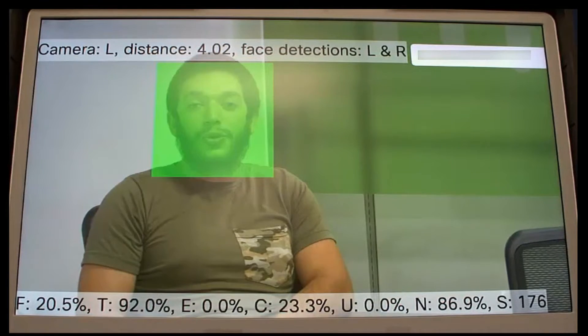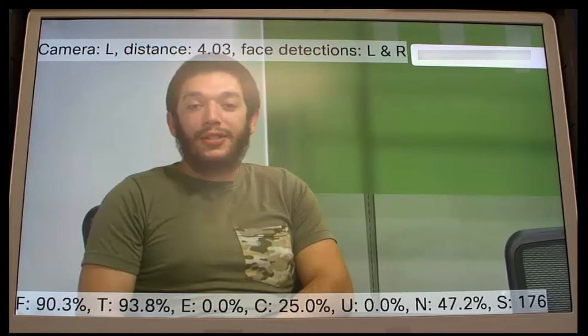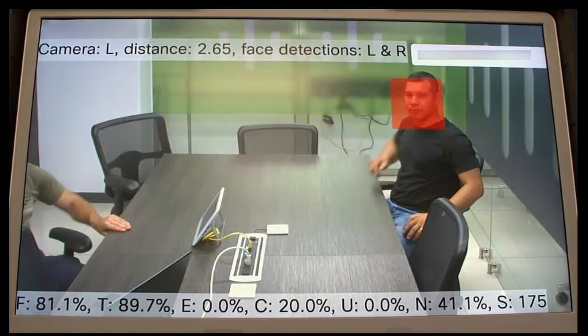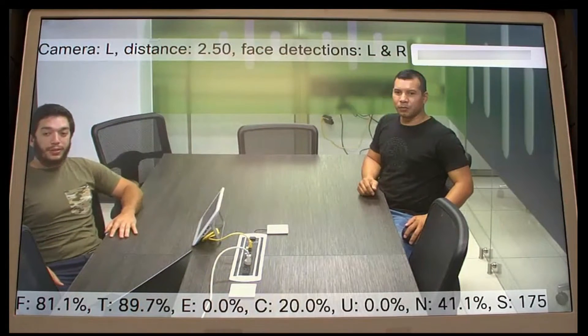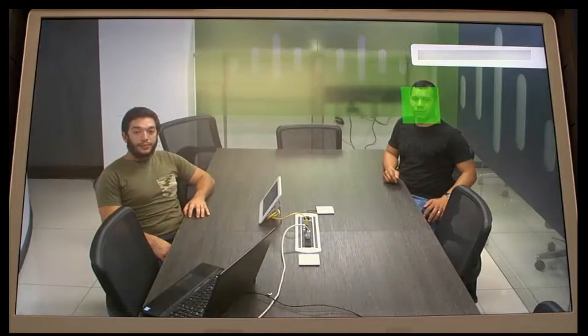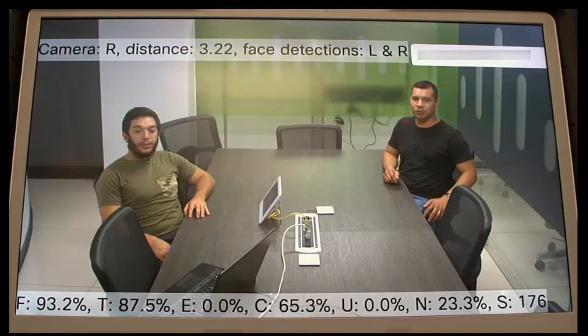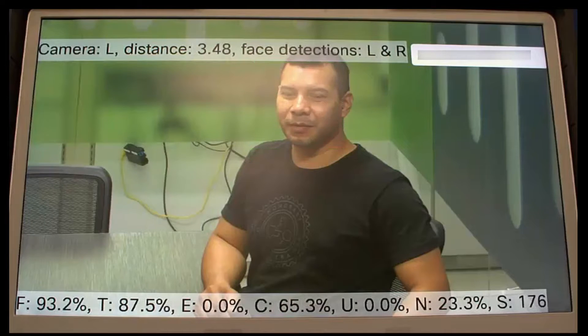Camera showing L or R means that the left or right camera is doing the tracking. Distance indicates the calculated distance from the camera lens to the face being tracked, and Face Detections indicates that the face tracking detected faces on the left and right sides.